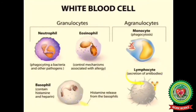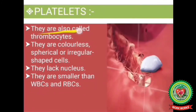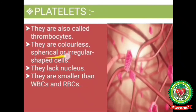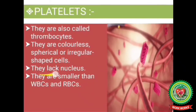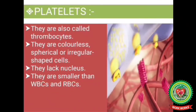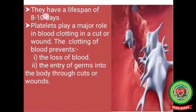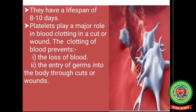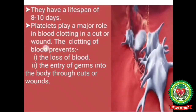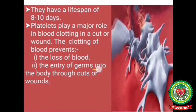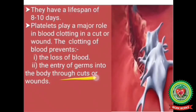Lymphocytes have a round nucleus. Platelets, also called thrombocytes, are colorless, spherical or irregularly shaped cells that lack a nucleus. They are smaller than WBCs and RBCs and have a lifespan of eight to ten days. Platelets play a major role in blood clotting — in a cut or wound, the clotting of blood prevents the loss of blood and the entry of germs into the body.